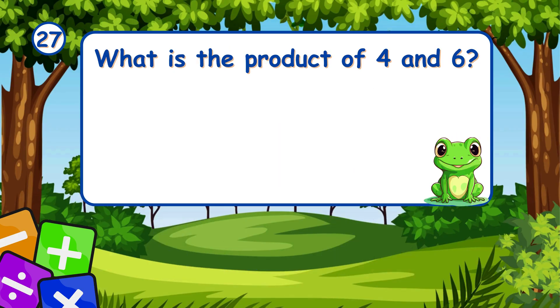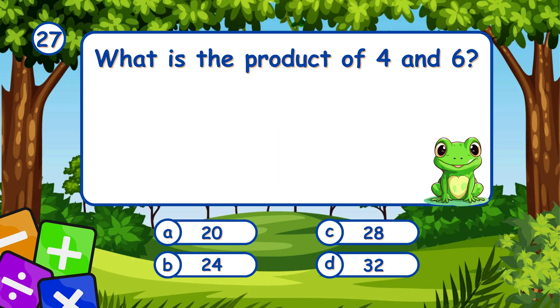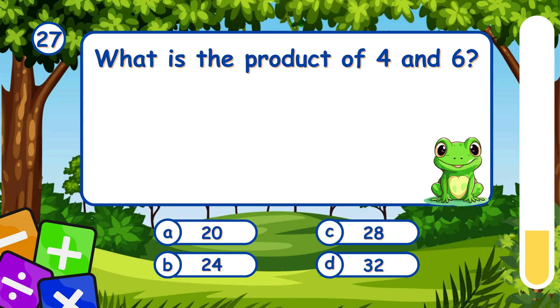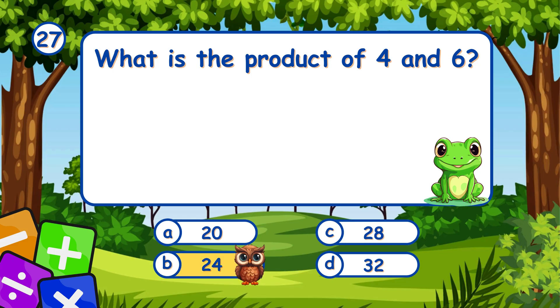What is the product of 4 and 6? It's B, 24. 4 times 6 equals 24.